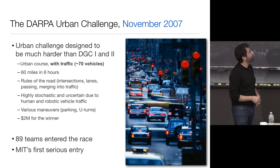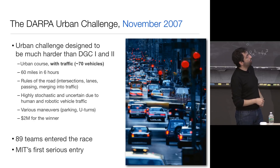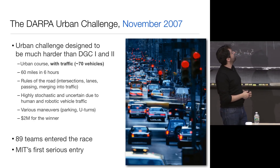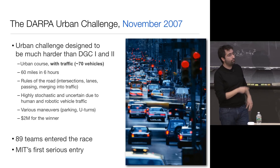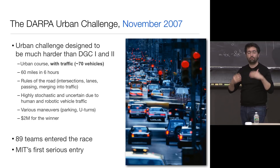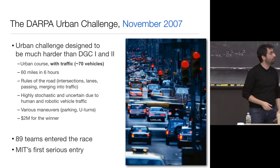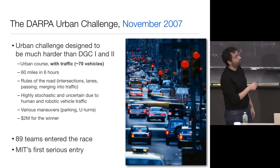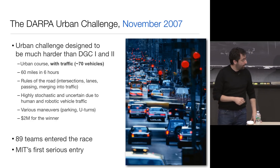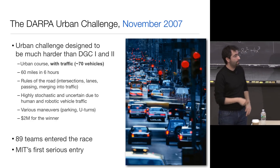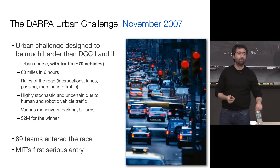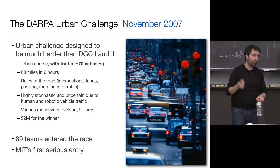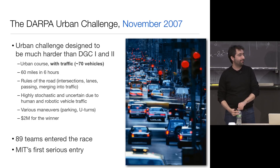DARPA proposed this in 2006 and did the race in November 2007. It was pretty hard — you'd have to do U-turns, K-point turns, be careful with stop signs. If you won, they'd give you $2 million — good incentive. Eighty-nine teams entered. We usually say it was MIT's first serious entry, but MIT's non-serious entry was a team that later turned into Cruise Automation, which GM ended up buying for a billion dollars.